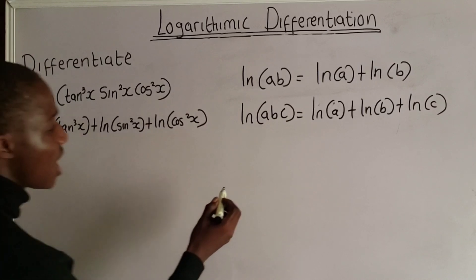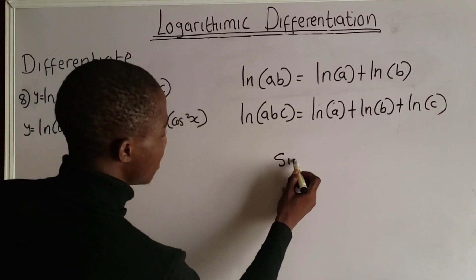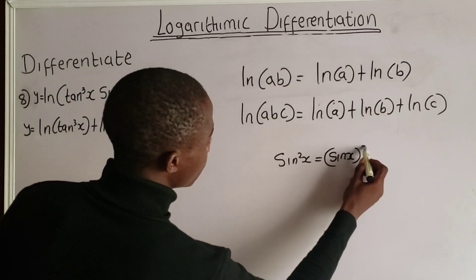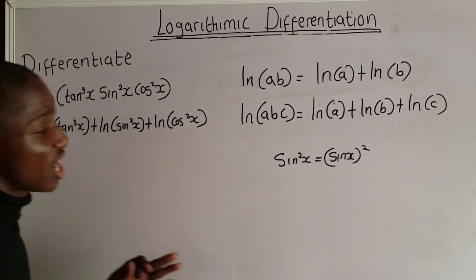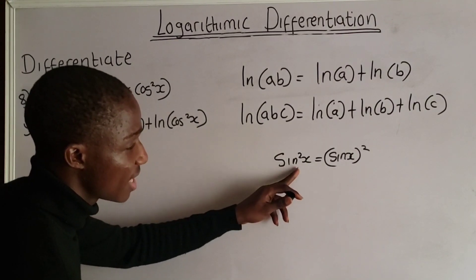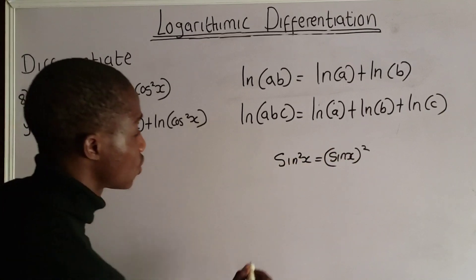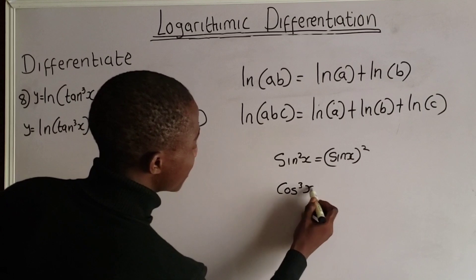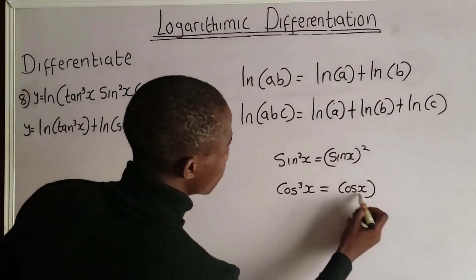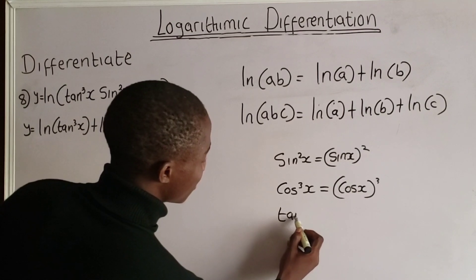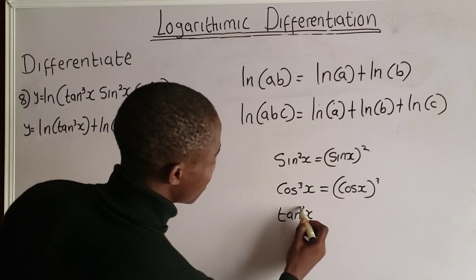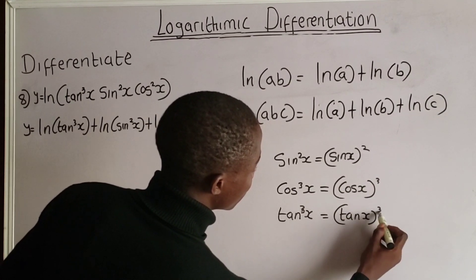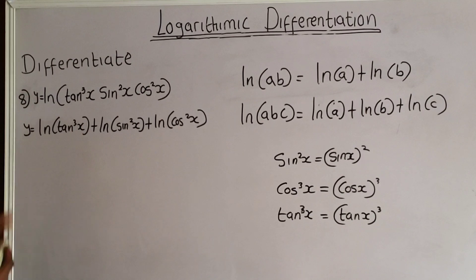Don't forget that sin²x is the same thing as (sin x) to the power of 2. Similarly, cos³x is the same as (cos x) to the power of 3, and tan³x is the same as (tan x) to the power of 3.